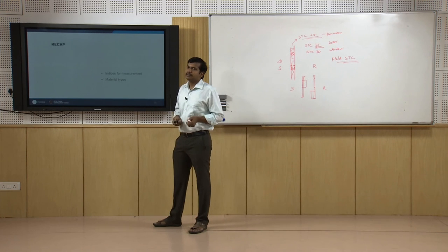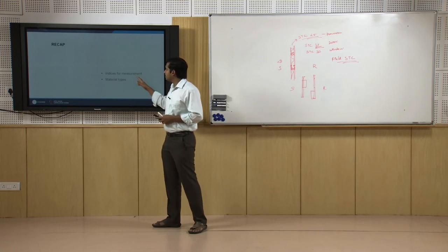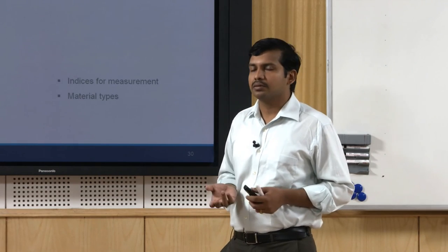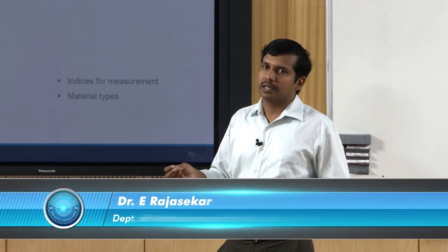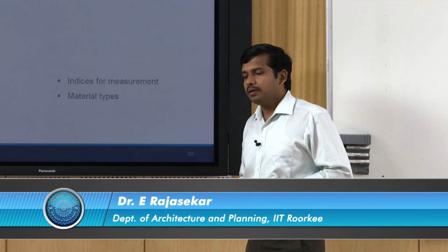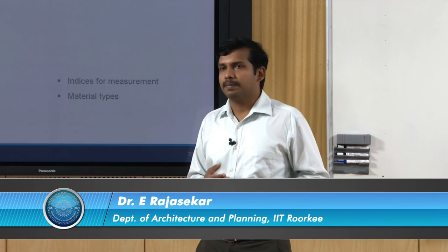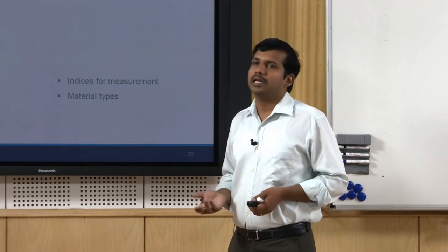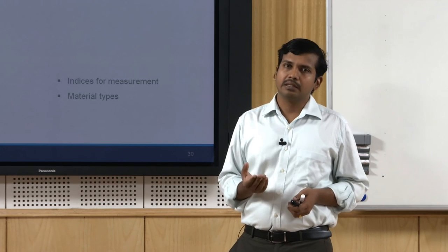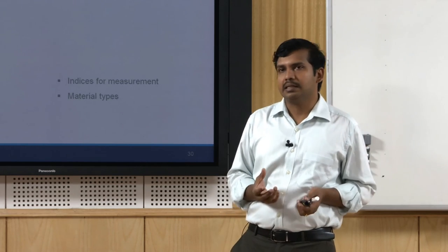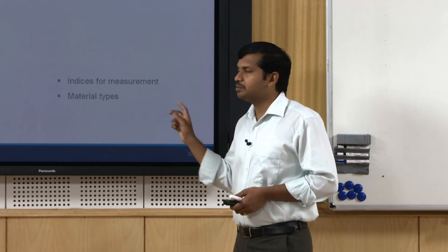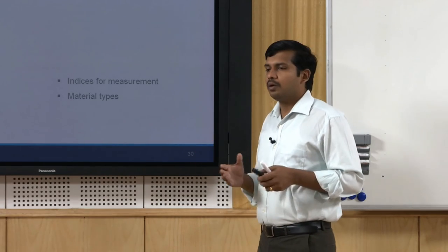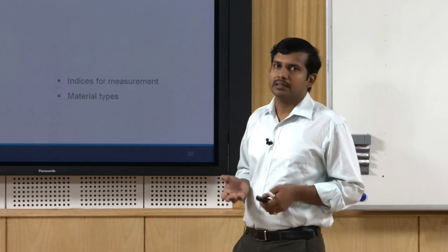To close, this module covered different indices of measurement for acoustic materials. We looked at acoustic absorption — reverberation time, NRC, and frequency-specific absorption coefficients — and the three types of absorbers: porous absorbers, panel absorbers, and cavity resonators. We also looked at sound insulating materials, transmission loss, Sound Transmission Class, how to calculate transmission loss between rooms, and strategies to increase STC of a partition system.